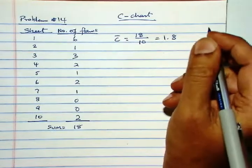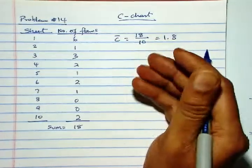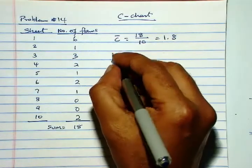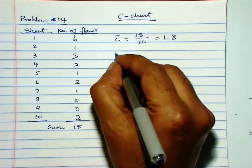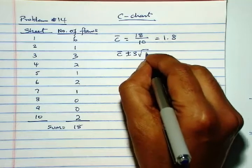And we will use three sigma limits, because that is the default. So control limits are, the formula is c-bar plus or minus three times square root of c-bar, which is 1.8, plus or minus three times square root of 1.8.